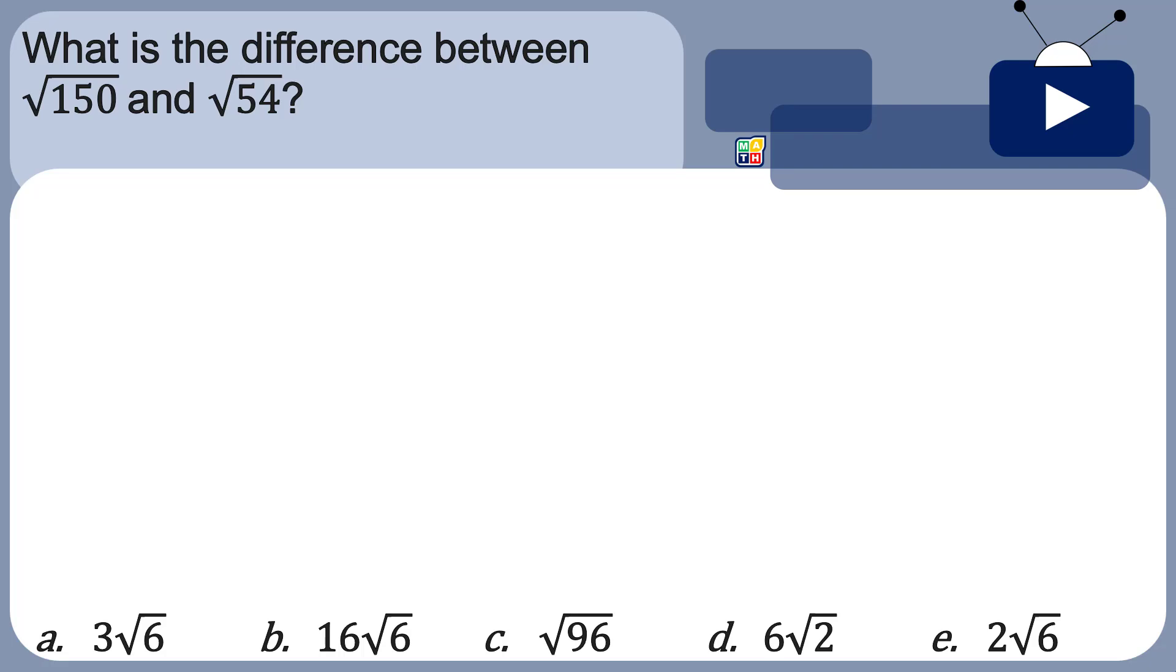These numbers are what we call radical expressions, also known as irrational numbers. They are considered irrational because 150 and 54 are not perfect squares. If you have square root of 9, it equals 3, so that would be rational. Now we are trying to get the difference, in short we are going to operate them. Square root of 54.